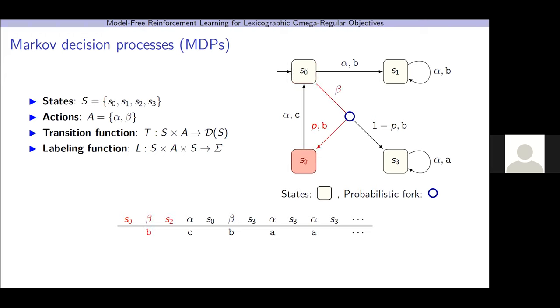So, as an example, say we start in the initial state, and we select the action beta. With probability p, we go to the state S2 and emit the letter B. From S2, say we take alpha, we go to S0, emit the letter C, and say we take beta again, and with probability 1 minus p, we go to S3, emit the letter B, and from S3, we can take alpha, emitting the letter A, and we take this transition forever, as this is the only transition.